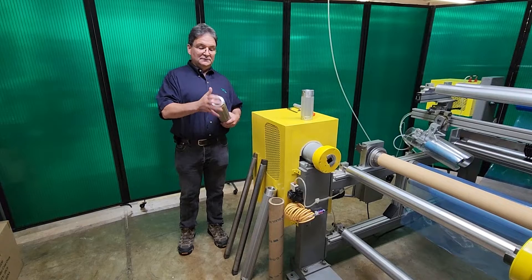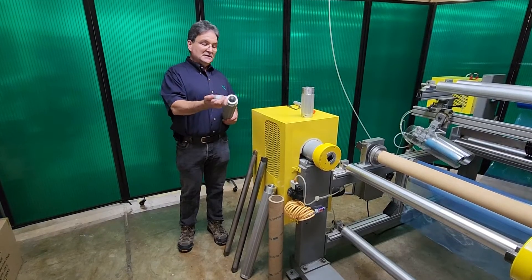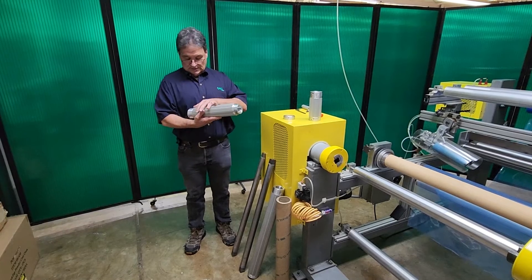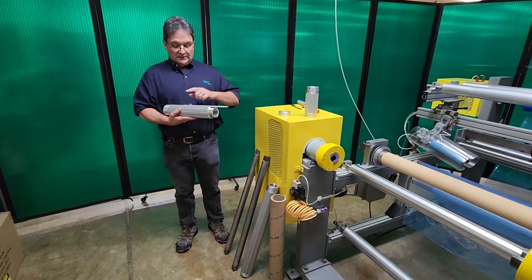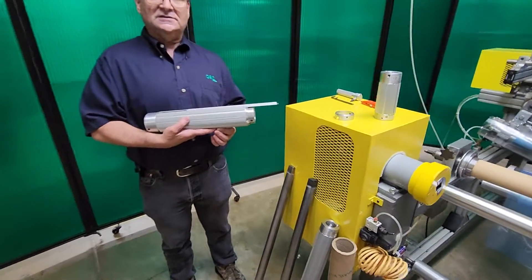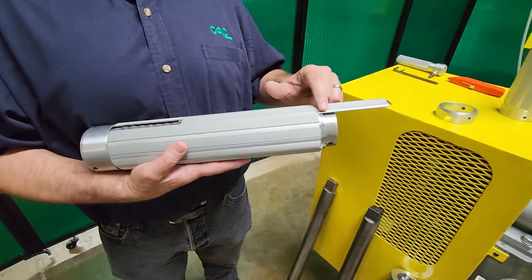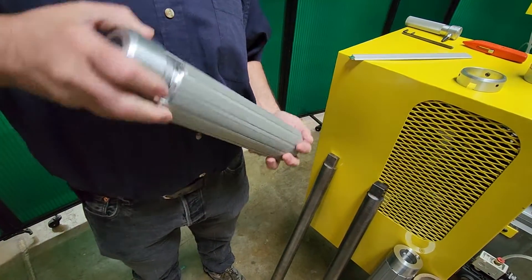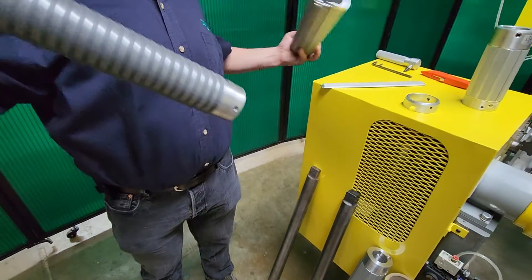I loosened up the set screws and this end cap comes off very easily. Inside this air shaft you'll see the outside is made of what we call interlocking segments. It's a leaf type air shaft. These segments all interlock with each other so you slide one of these out and then you can see the internal construction of this air shaft.